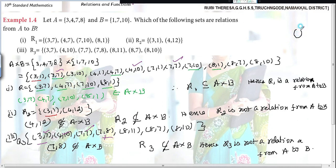Relation is a subset of a Cartesian product. But here this R3 relation is not a subset of A cross B. Because 7 comma 8 is not an element of A cross B. Do you follow? Hence R3 is not a relation from A to B.